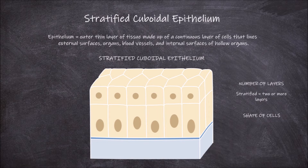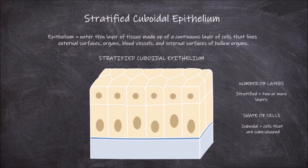When the epithelial cells are cube shaped and appear square shaped in a cross section, they are called cuboidal cells. Stratified cuboidal epithelium is made up of two or more layers where the apical cell layer or top cell layers are cube shaped.